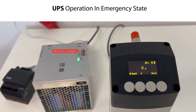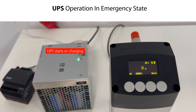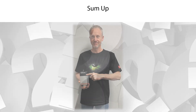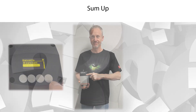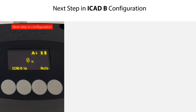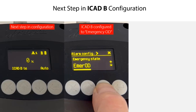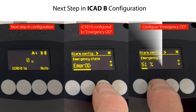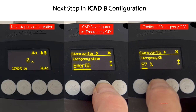You have now seen demonstrated how to configure the UPS emergency state in the ICAD-B, so that you know how to select the needed valve position during a power failure. This will efficiently support you in doing a correct UPS setup and ensure a correct and safe system operation. The ICAD-B is now ready for the next step. Please note that if you have configured the ICAD-B to activate the valve position Emergency OD during a power failure, then you also need to configure the UPS emergency opening degree in the ICAD-B.